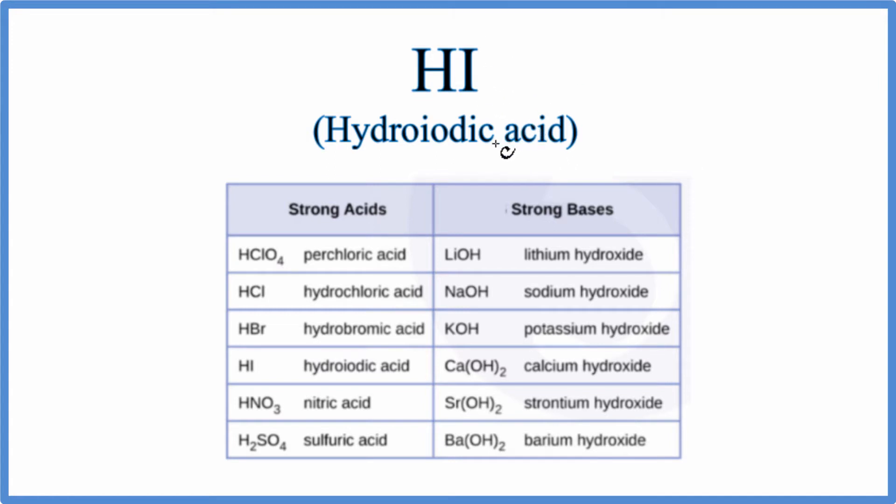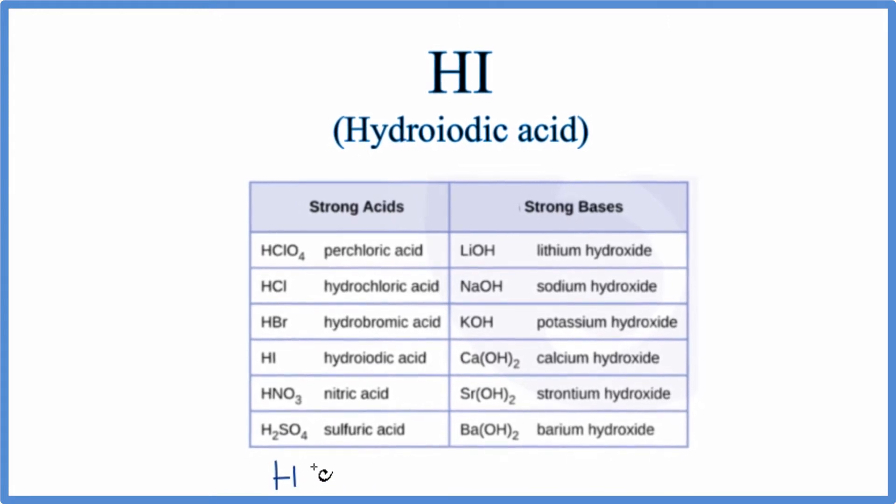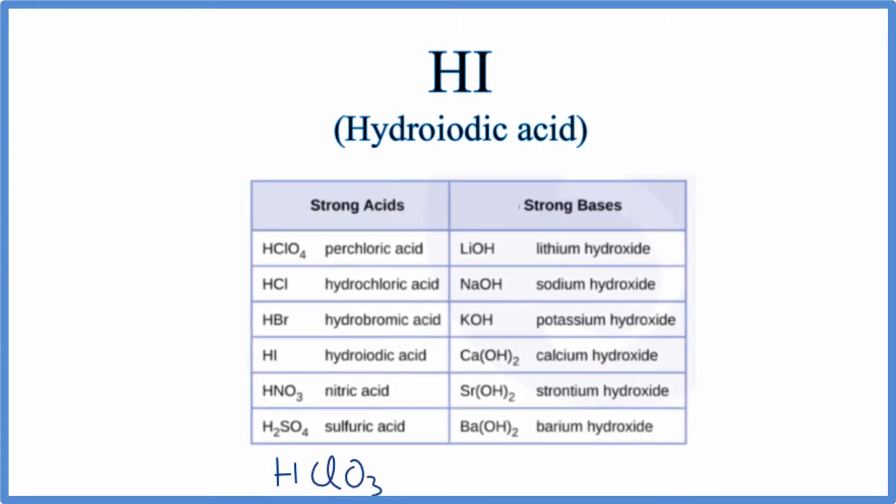There are a few ways we could do this. First we could just memorize the strong acids. These are the common strong acids and we have the common strong bases. I'd also probably add HClO3 to this list as well. So if you memorize these, and it's not on here, it's likely a weak acid.